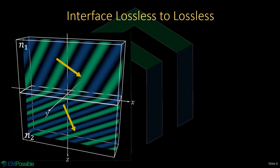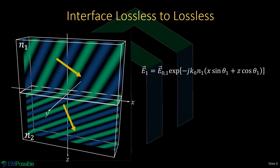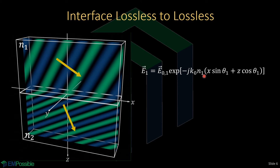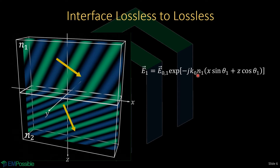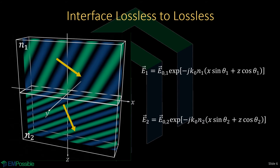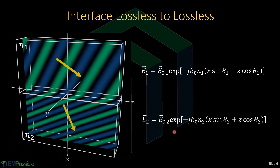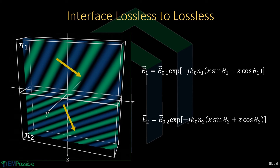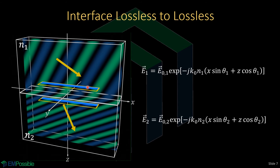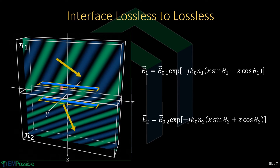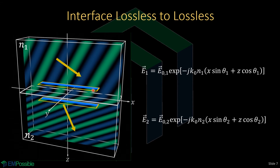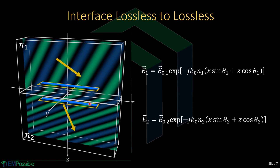We can write expressions for both waves using the same form as before. In medium one, we have a subscript one on the refractive index and theta one as the angle of incidence. We write essentially the same expression for medium two with subscript two for its parameters. Looking at the amplitude in a direction parallel to the interface, the amplitude is constant for both waves since there's no decay. The amplitudes on both sides of the interface must match — it's continuous across the interface.